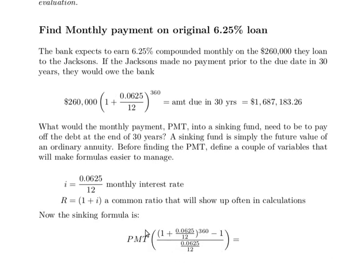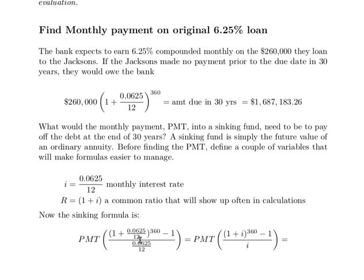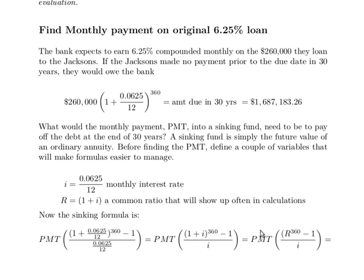That's the future value of an ordinary annuity, and look how it cleans up if we use these variables. If we replace each monthly rate with I and replace 1 plus I by R, then the equation becomes much simpler. All of that has to be equal to that more than a million and a half dollars. We're setting up this sinking fund to pay that off, and those payments are what we need to find. To find the monthly payment, we solve this equation — dividing both sides by the coefficient to isolate the payment. Let's calculate this value in the spreadsheet.